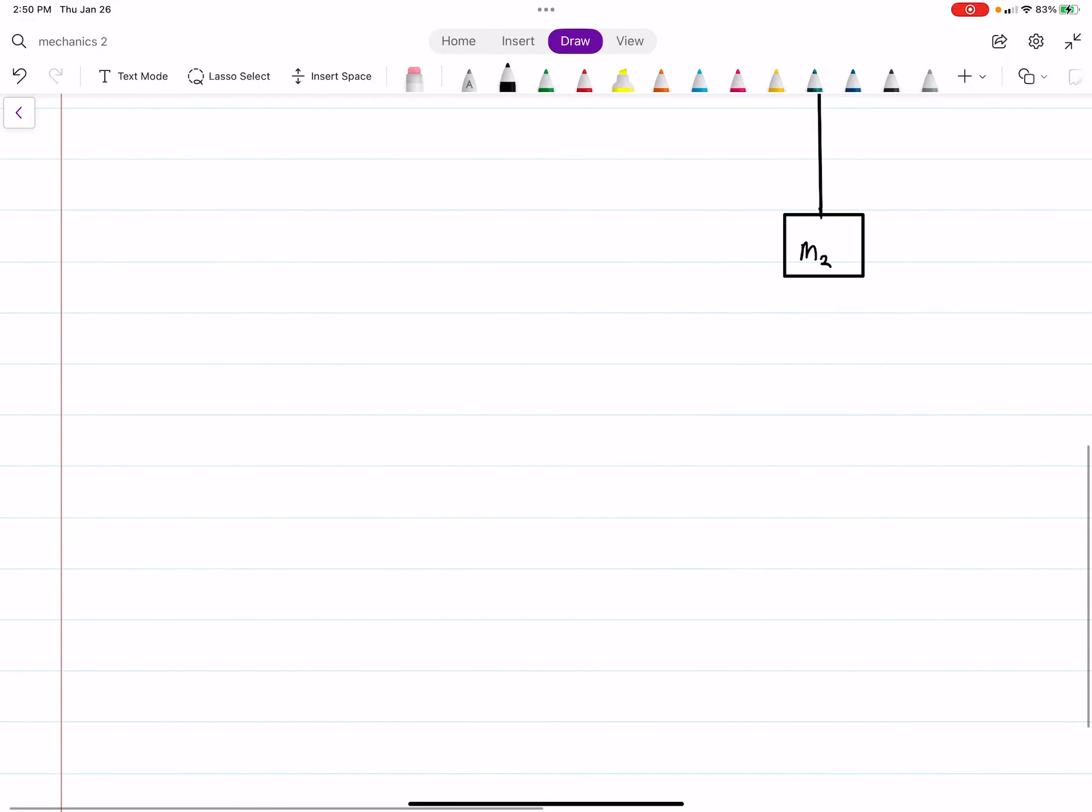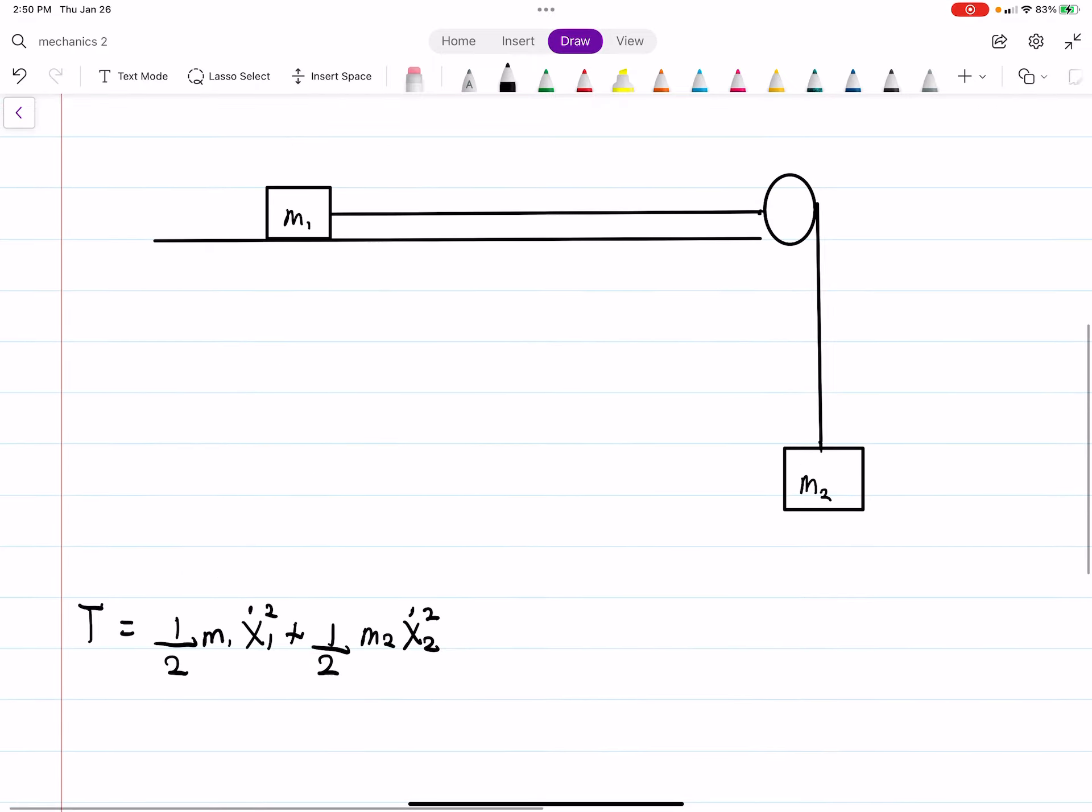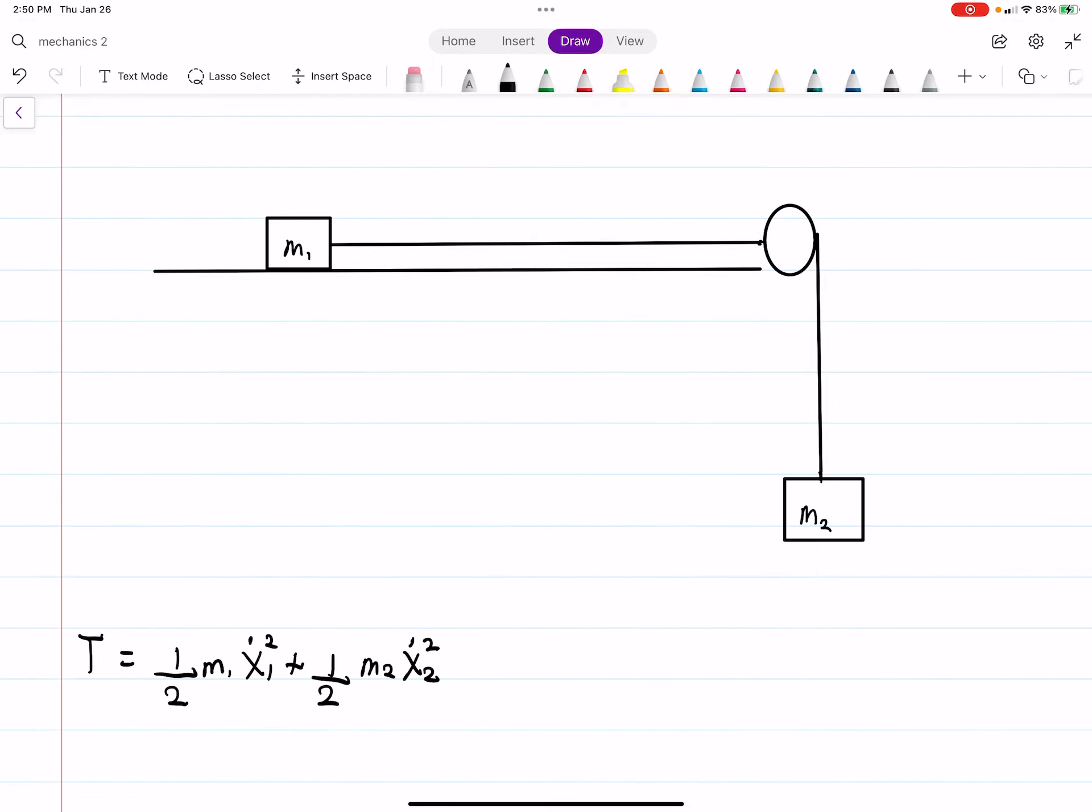To find the Lagrangian, the first thing we want to do is find the kinetic energy. We have 1 half M1 X1 dot squared plus 1 half M2 X2 dot squared. Nothing too crazy here, we just added the kinetic energies.